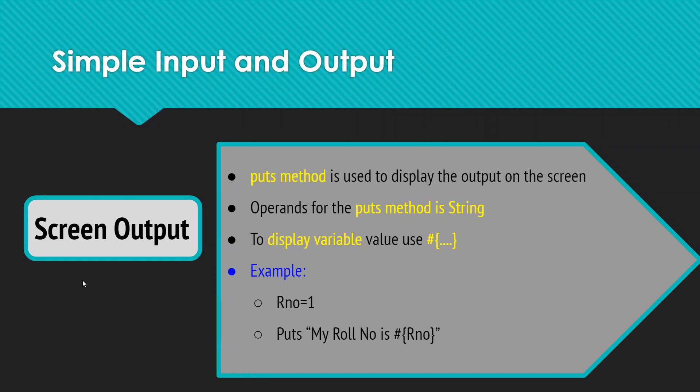Very first, we will concentrate on how to keep an output on the screen when you want to print some statement, want to print some values to the user. So here, the method used for printing anything on your screen is a puts method, and it is used to display the output on the screen. The operands for puts method is always a string. So whatever you are going to print, Ruby considers it in a string form.